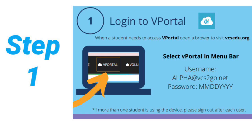Once you get to the website, find vPortal in the menu bar. The student login is their alpha code at vcstogo.net, and their birthday is their password.